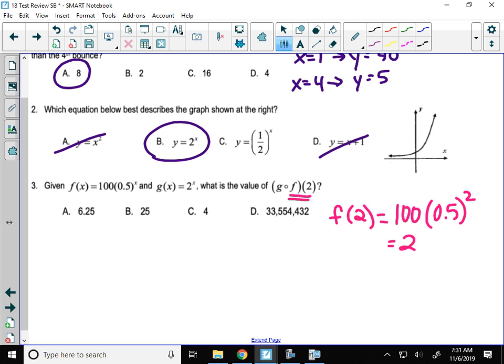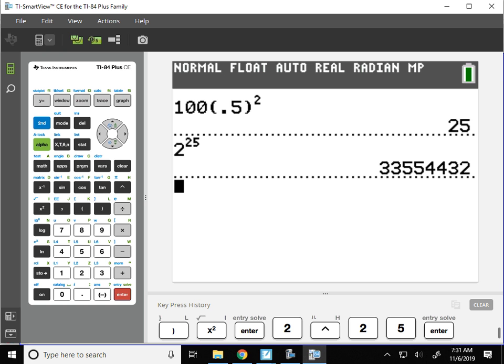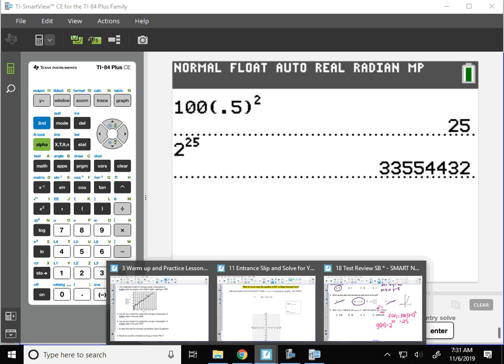So now what we do when we get that output of 25 is, remember, that answer goes into the function on the left, which is g. So I'm going to find g of 25, which would be 2 to the 25th. I'm sure you can guess at this point which answer it is, 2 to the 25th. It should be kind of a big number. 33,554,432.